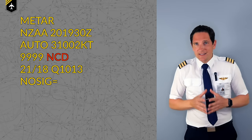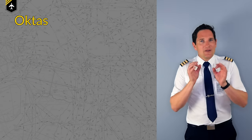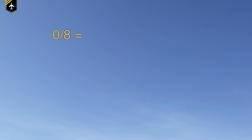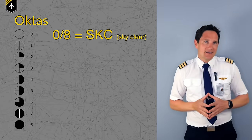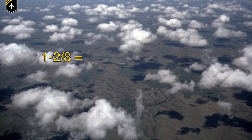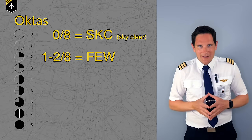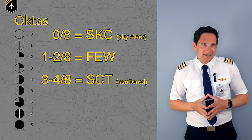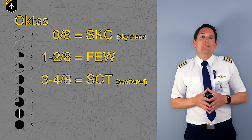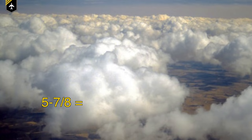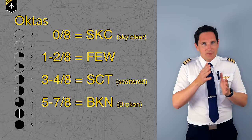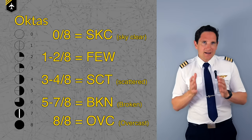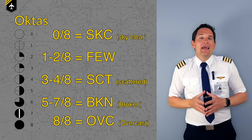Another important concept for clouds in aviation is that of the octas. We split up the sky into eight equal parts to measure the clouds. If all eight parts are cloud free, we say it's sky clear. If one or two eighths of the sky contain clouds, we say there are a few clouds, shown on reports as FEW. If there are three to four eighths, we call the cloud scattered, denoted as SCT. Five, six, and seven eighths are called broken cloud, shown on reports as BKN. And if all eight parts are cloudy, then we say it is overcast, shown as OVC.